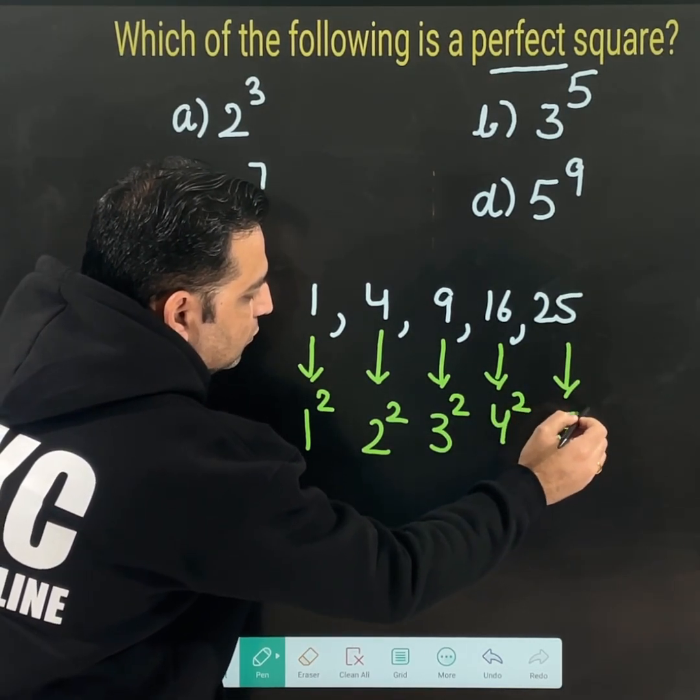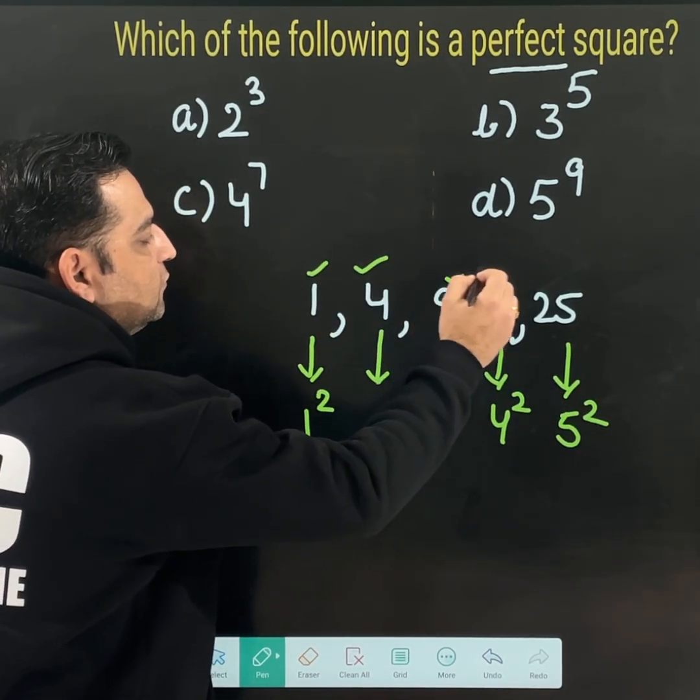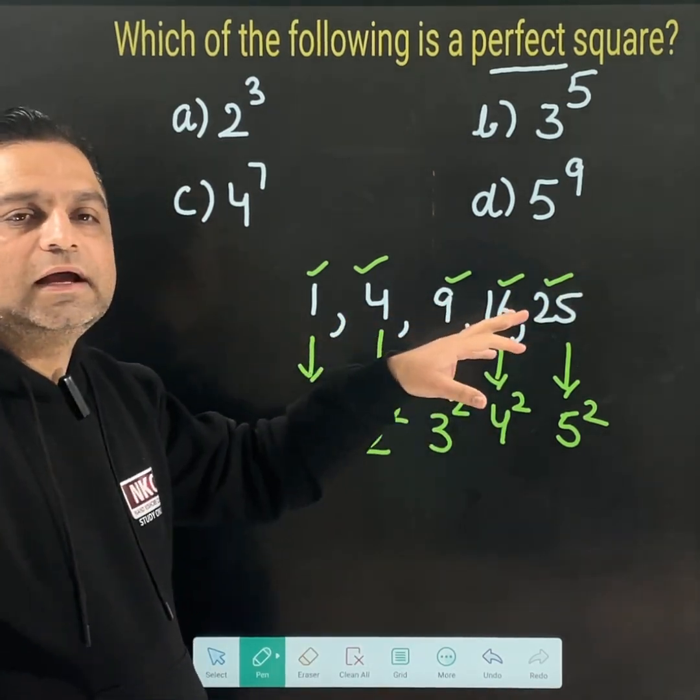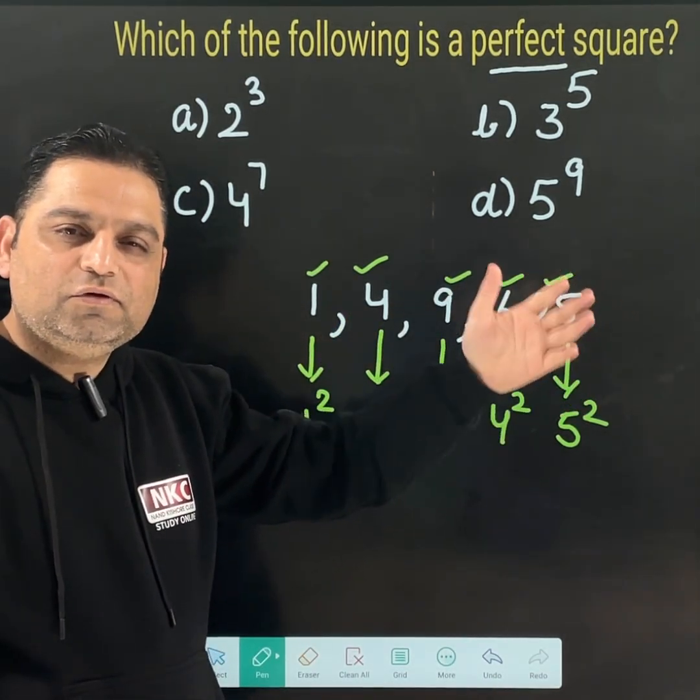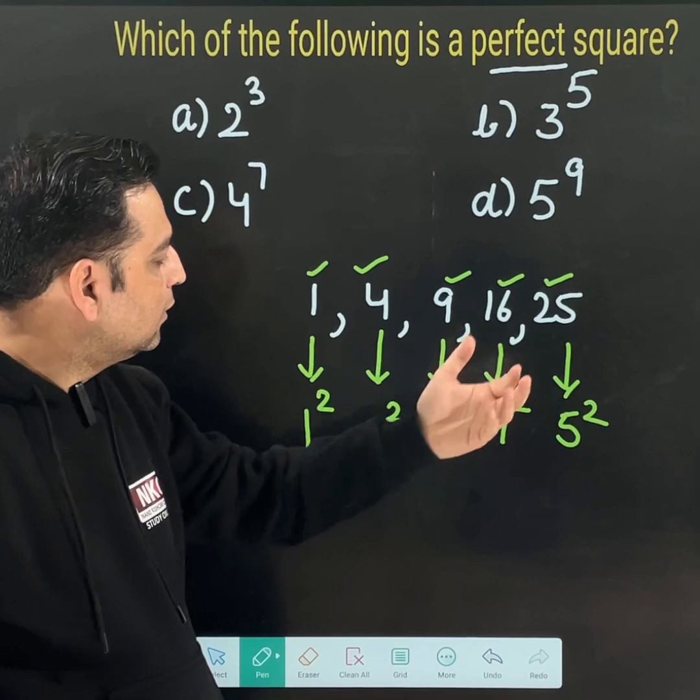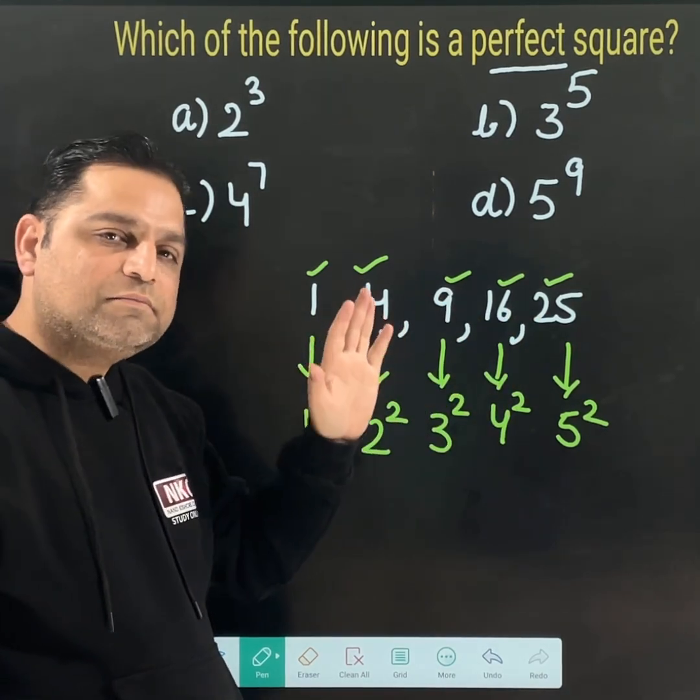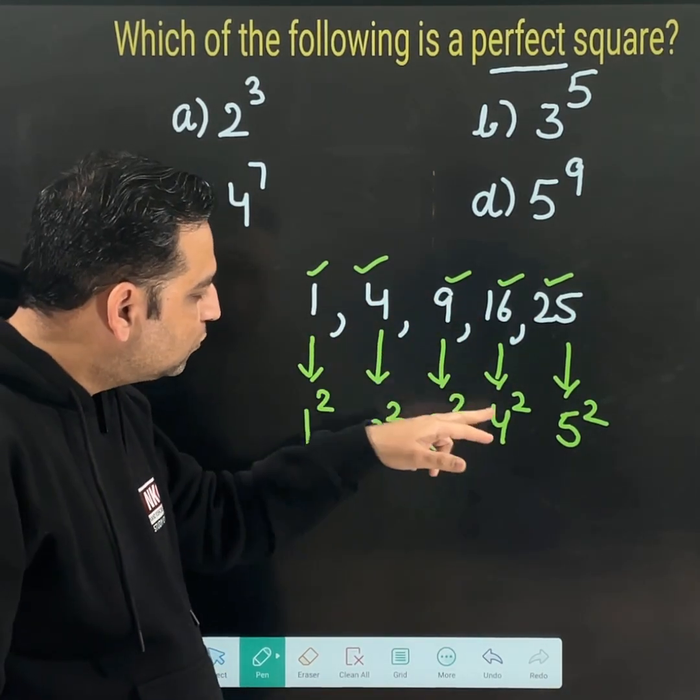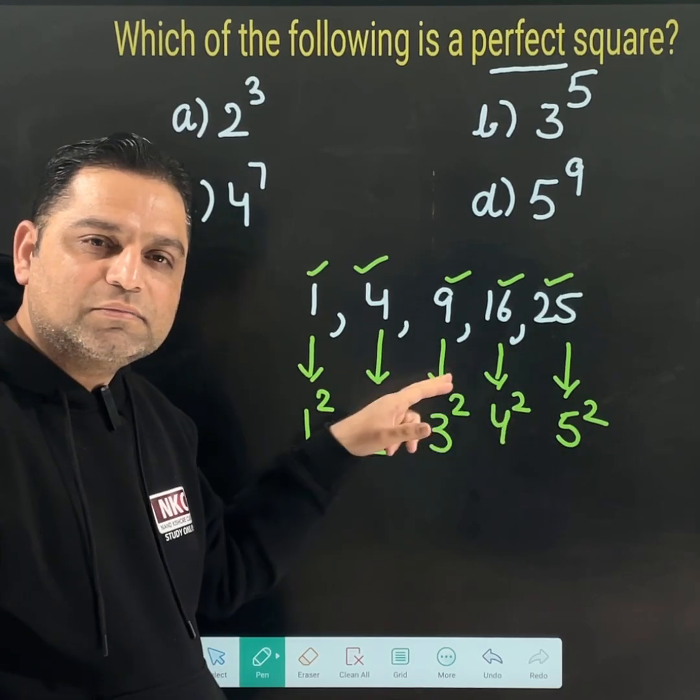So these upper numbers—1, 4, 9, 16, 25, 36, 49, and so on—these all numbers are perfect squares because they are formed by squaring a natural number or whole number.